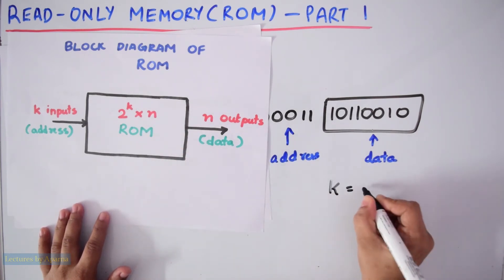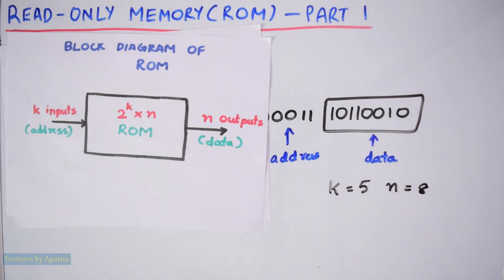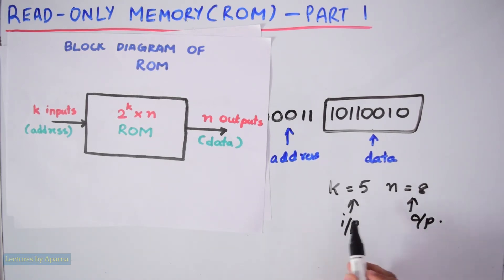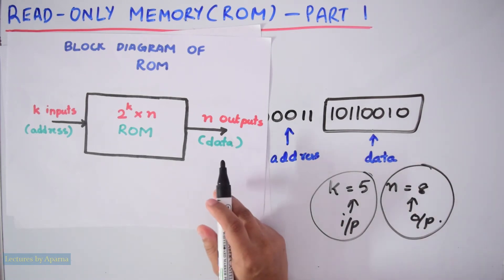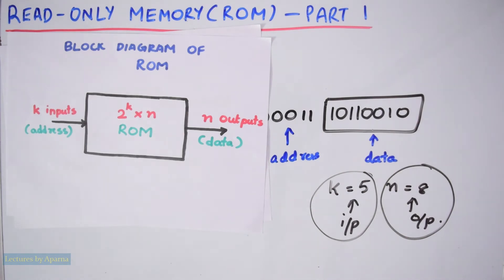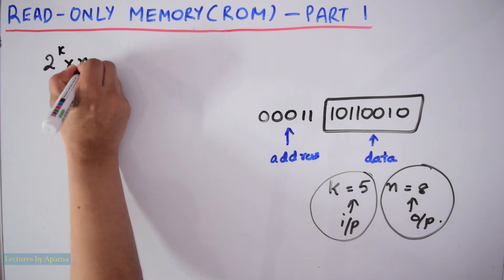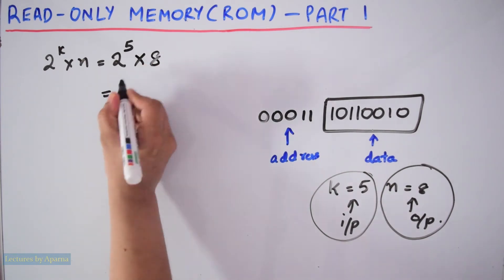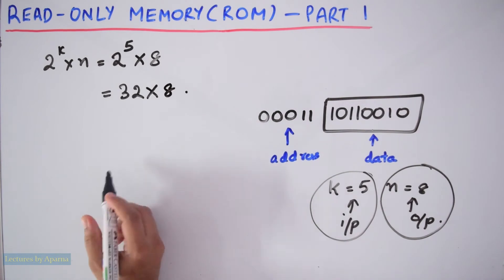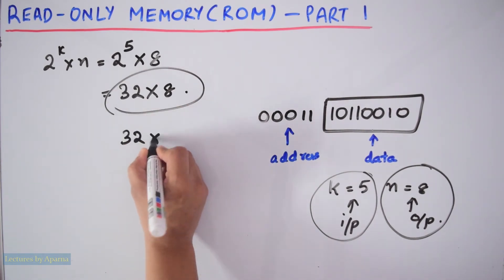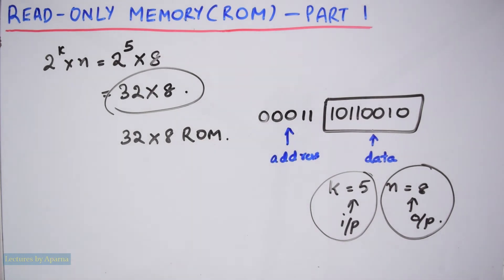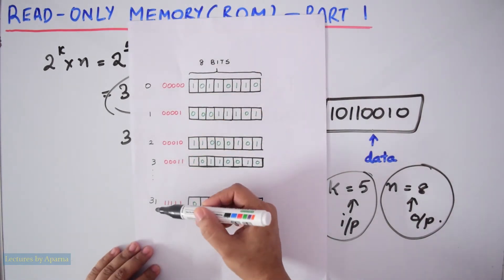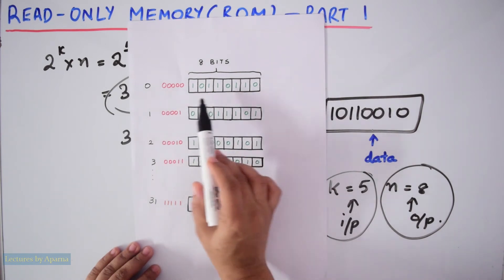If K is equal to 5 and N is equal to 8, there are 5 address input lines and 8 output data lines. So 2 raised to K by N equals 2 raised to 5 by 8, which equals 32 by 8. This is a 32 by 8 ROM, meaning there are 32 memory locations in it, and each memory location stores 8-bit data.